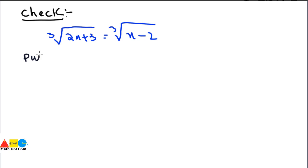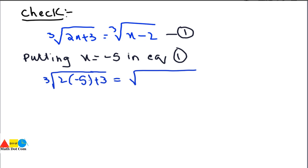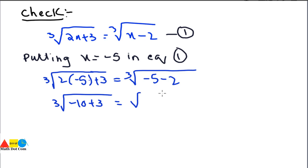The original equation was: cube root of (2x + 3) = cube root of (x - 2). Putting x = -5: cube root of (2 × -5 + 3) = cube root of (-5 - 2), which becomes cube root of (-10 + 3) = cube root of (-7), and cube root of (-7) = cube root of (-7).